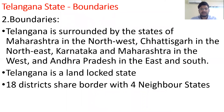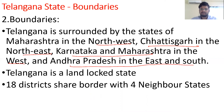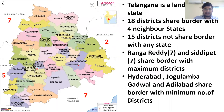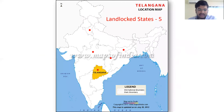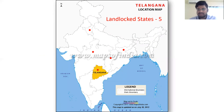Telangana is surrounded by Maharashtra in the northwest, Chhattisgarh in the northeast, Karnataka in the west, and Andhra Pradesh in the east and south. Telangana is a landlocked state — it has no direct access to the sea. States or countries which do not have direct access to the sea or do not have ports are called landlocked states or countries.